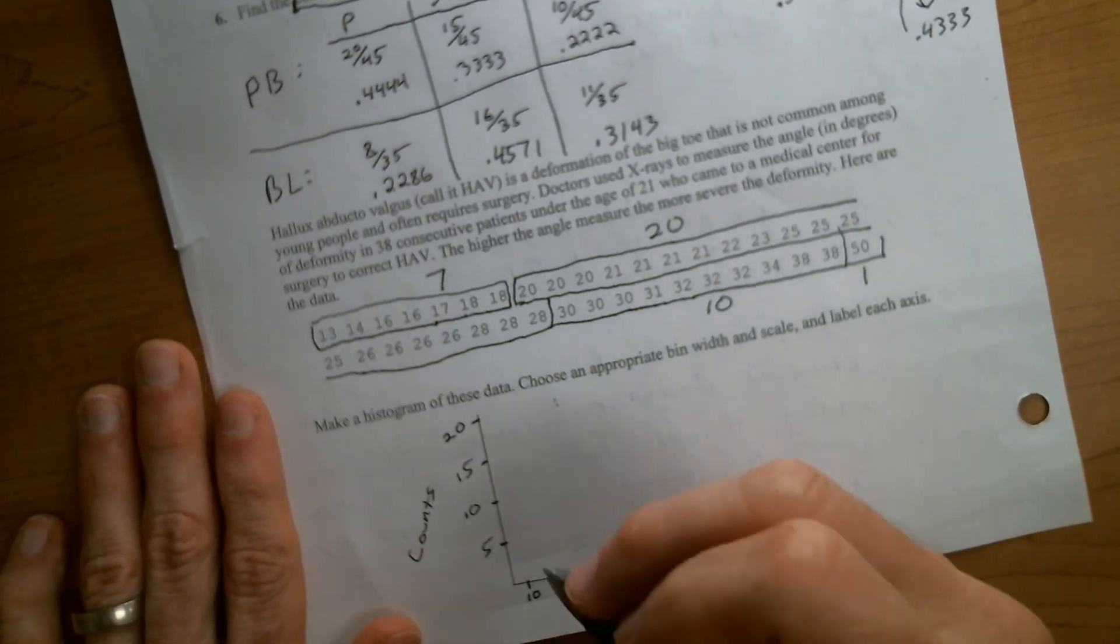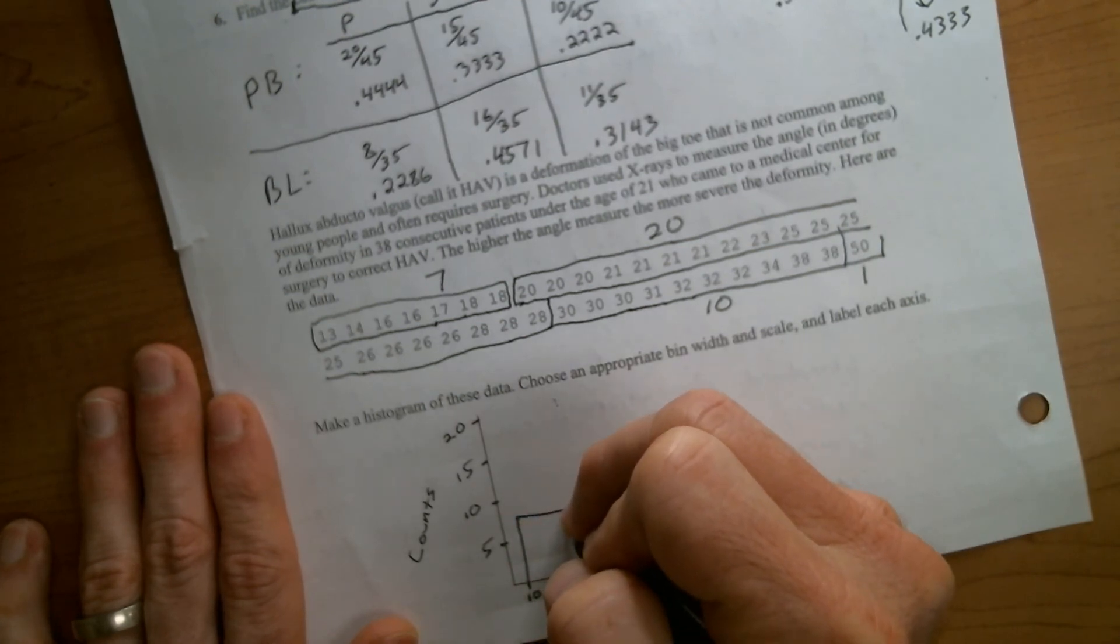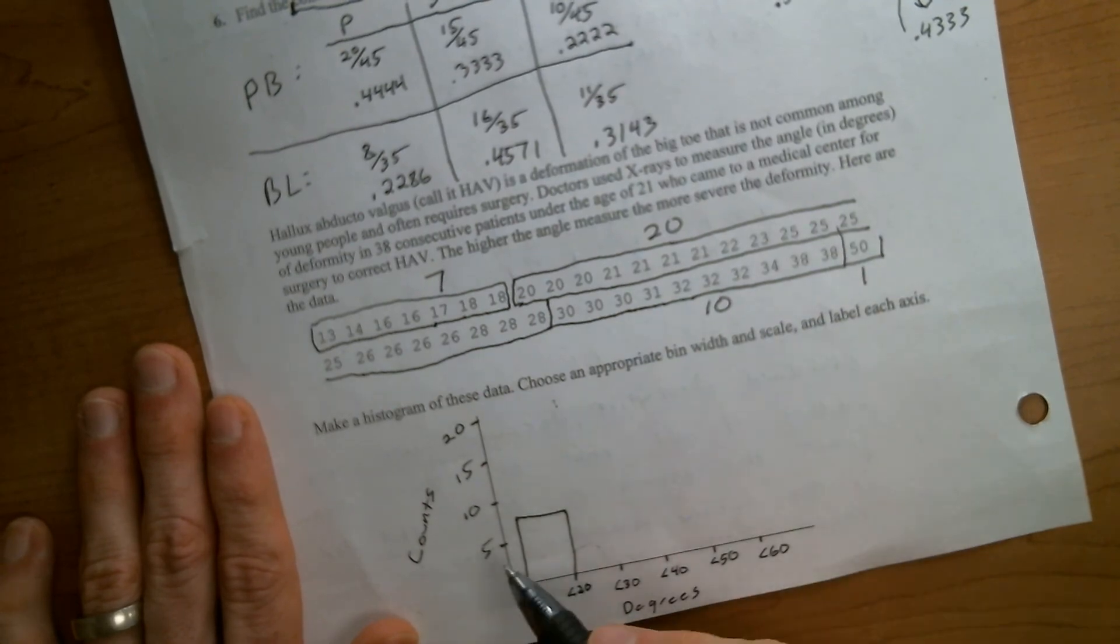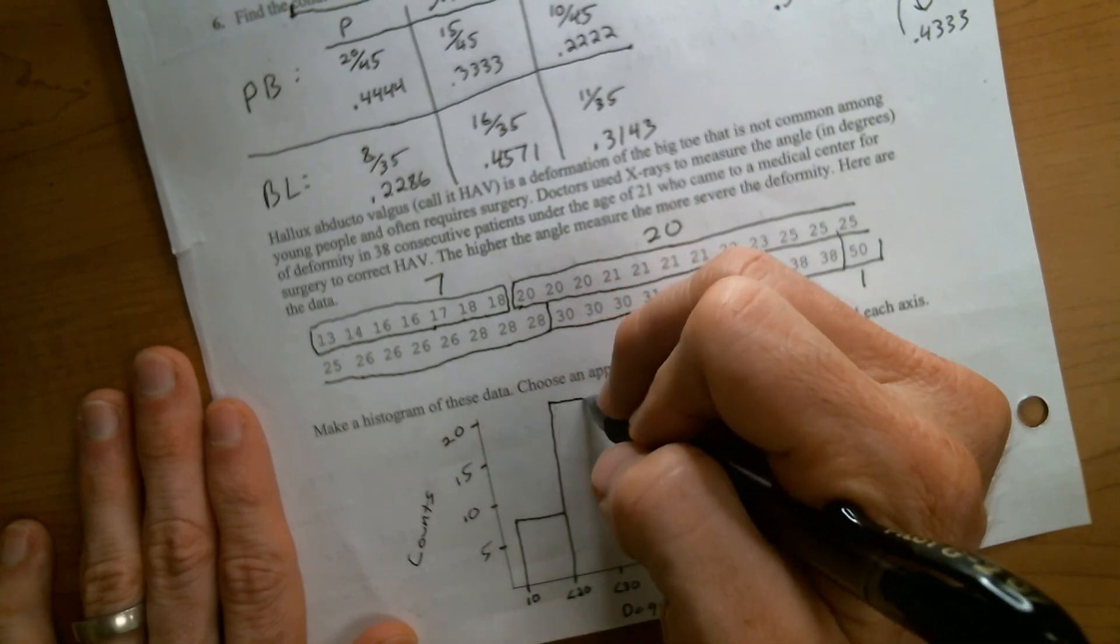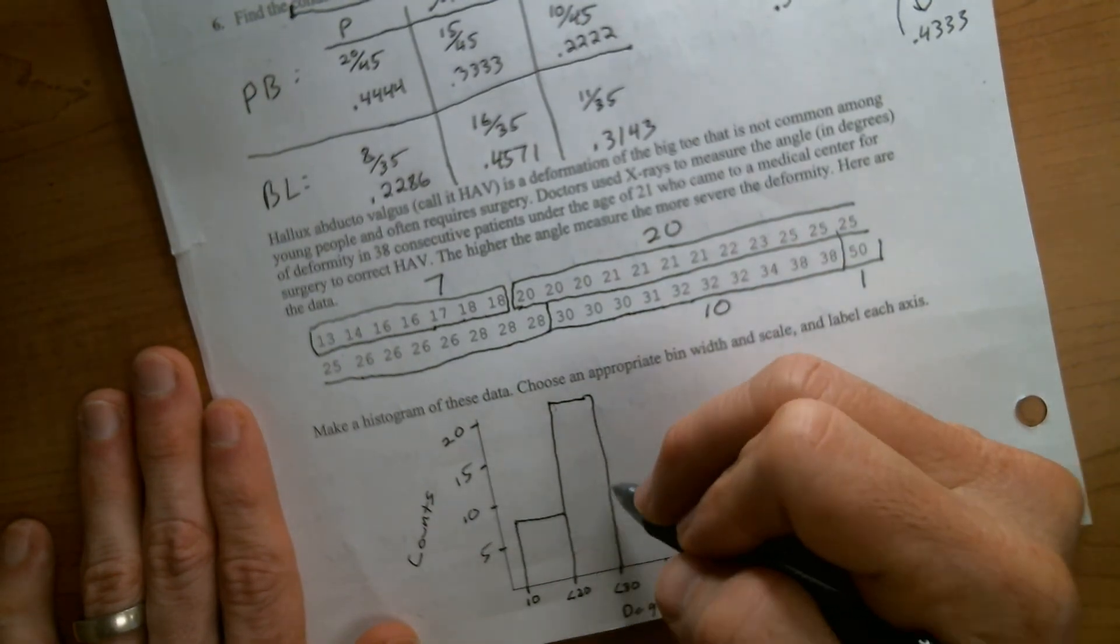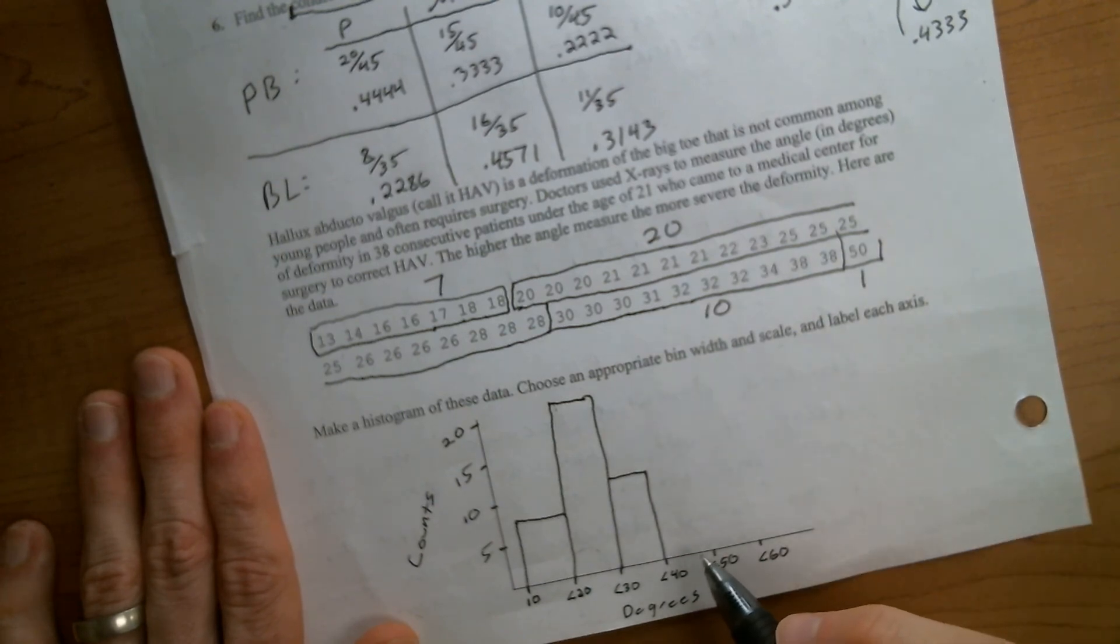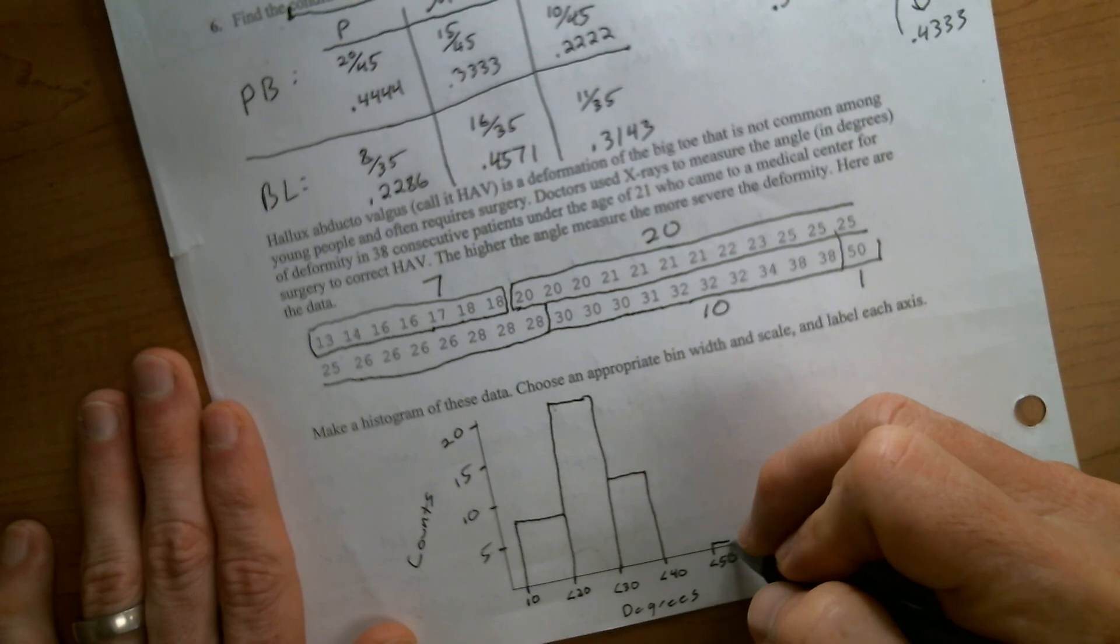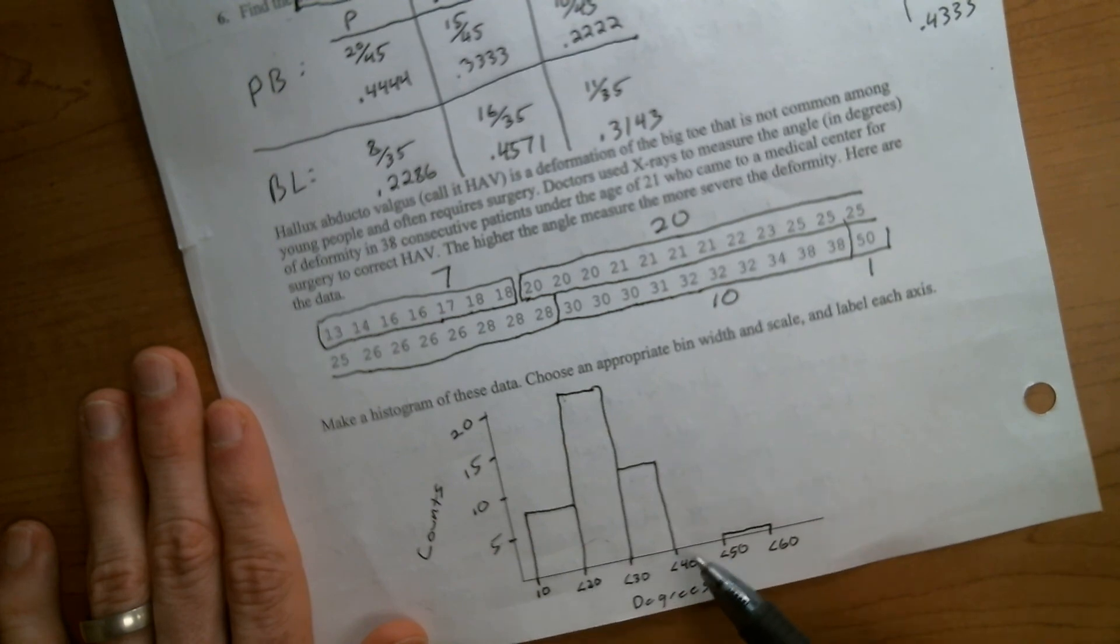So that first bar is going to have a height of 7. And again, I'm not going to be sitting here with a ruler making sure that this is exactly 7 as long as it's in the right neighborhood. The next bar should be 20, so there's my 20 bar. Then I have a bar at 10. Then I have a blank space, and then I have a bar of 1. And we generally said that a histogram should always have 5 bars. So this would count as a bar, so this is my 5th bar right here. So here's a histogram.